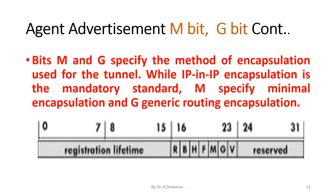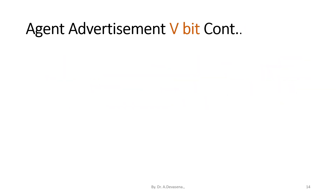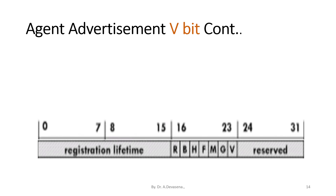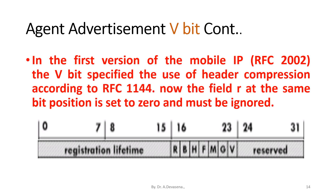The M-bit specifies minimal encapsulation and the G-bit specifies generic routing encapsulation. Regarding the V-bit field in agent advertisement: in the first version of Mobile IP, RFC 2002, the V-bit specified the use of header compression according to RFC 1144. Now the field is a small 'r' at the same bit position, is set to zero, and must be ignored.